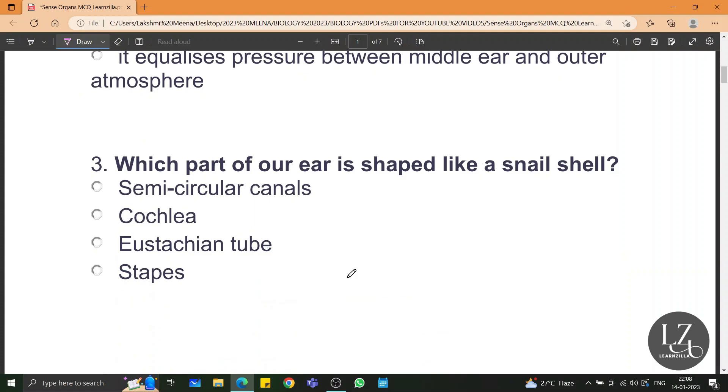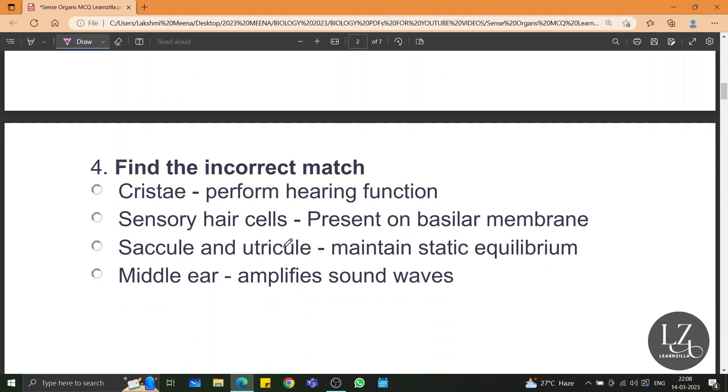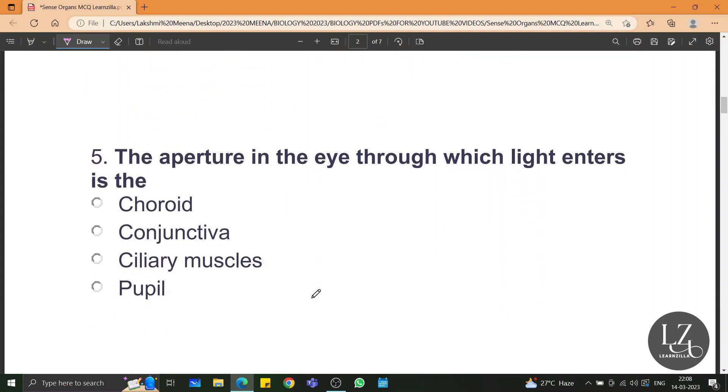Which part of our ear is shaped like a snail shell? It is cochlea. Find the incorrect match. The incorrect match is cristae performing hearing function. This is not the correct one. Rest all are the right options. The aperture in the eye through which the light enters is the pupil.